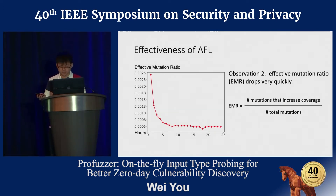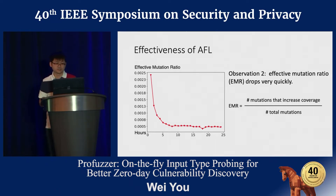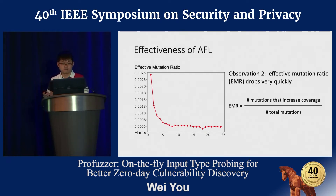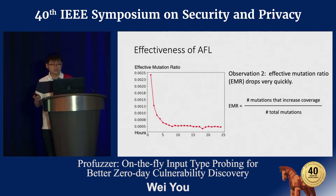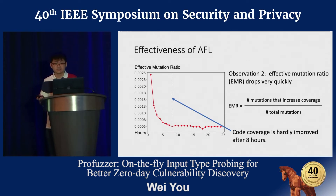Another observation is that the effective mutation ratio drops very quickly. The effective mutation ratio is measured by the number of mutations that increase coverage over the total number of mutations. As presented in this figure, whose x-axis stands for hours of fuzzing and y-axis stands for the effective mutation ratio, we can see that code coverage is hardly improved after eight hours.